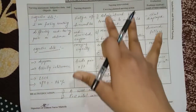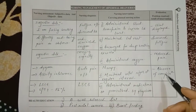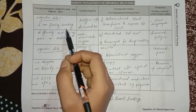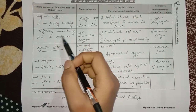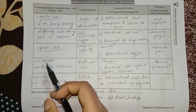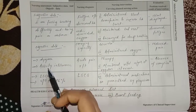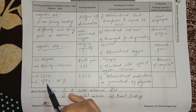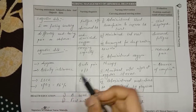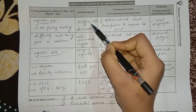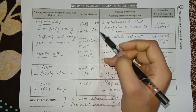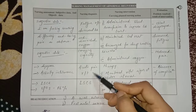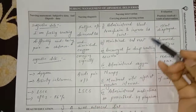Nursing management of abnormal deliveries. Subjective data: patient conveyed that she is feeling breathing difficulty and having pain in her abdomen. Objective data: activity intolerance, LSCS, and SpO2 level was 86%. Nursing diagnosis: fatigue related to decreased hemoglobin and diminished oxygen carrying capacity, and acute pain related to LSCS.